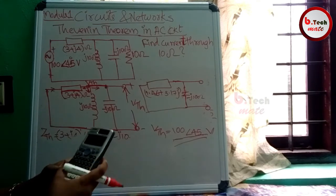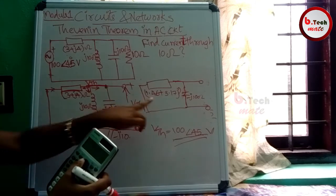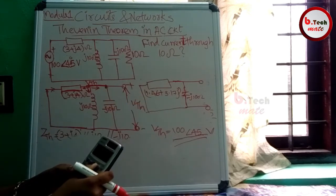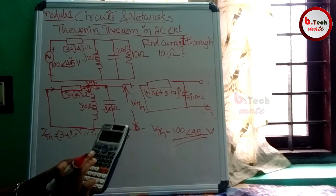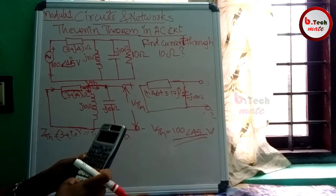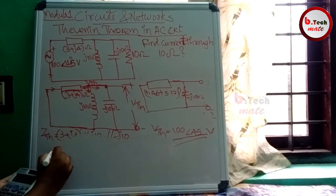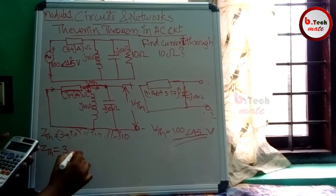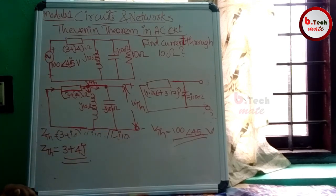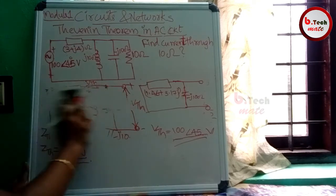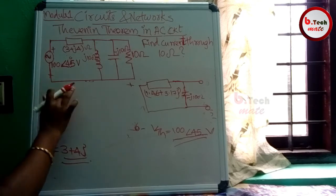Calculating 1.46 plus 3.17J bracketed — we have multiplication, so it is 100 terms. Bracketed up. Check: minus J10, denominator divided by 1.46 plus 3.17J minus 10J. The answer is approximately Z equal to 2.99, meaning ZTH equals 3 plus 4J.